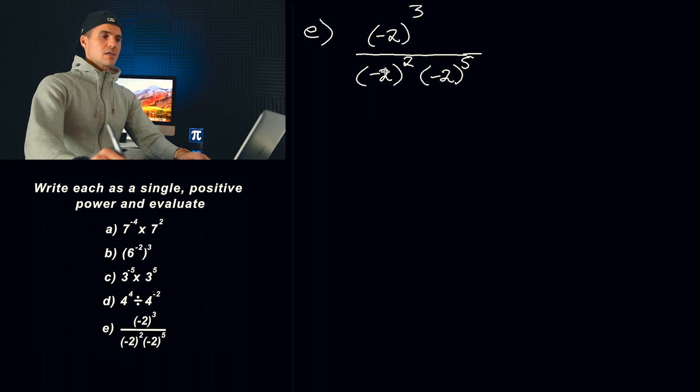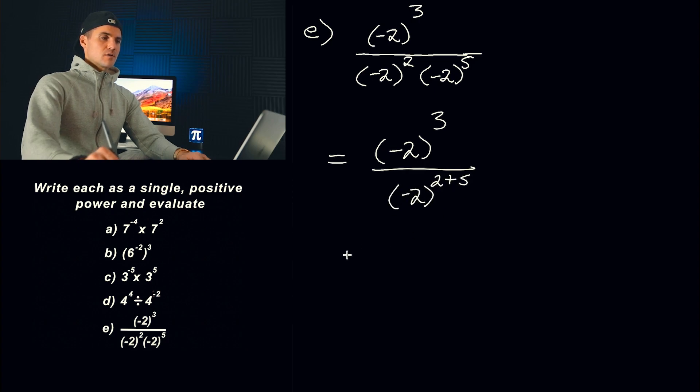And then finally, part E, we got (-2)^3 over (-2)^2 × (-2)^5. So first thing I'm going to do here is I'm going to work with the denominator. So notice again, two expressions multiplying with the same base. So we could add the exponent. That would be two plus five. So that would be (-2)^3 over (-2)^7.